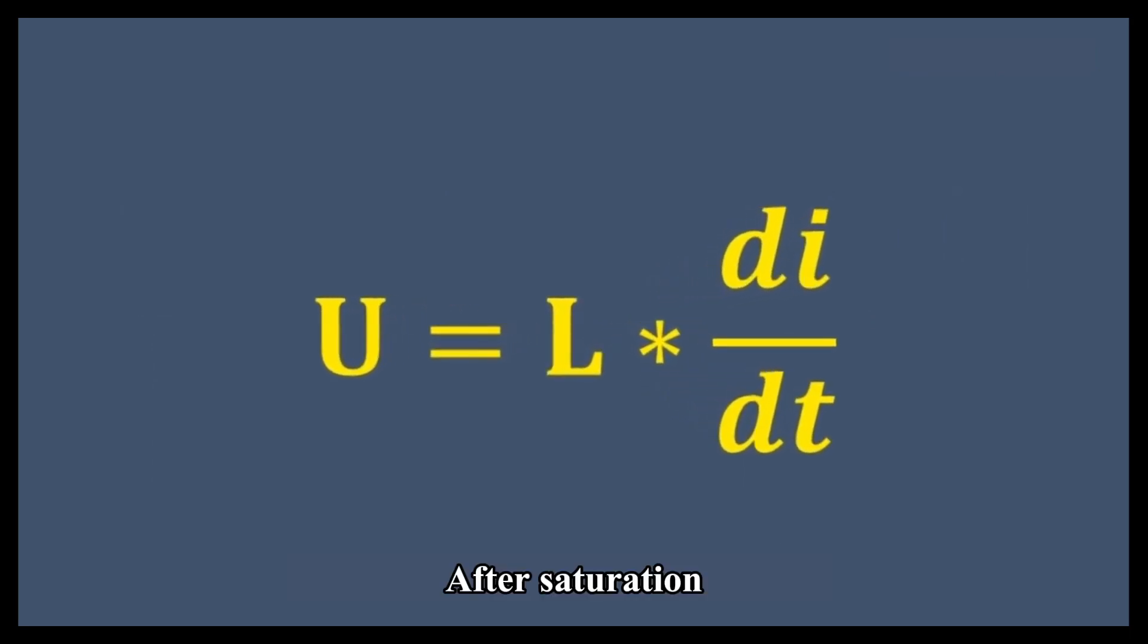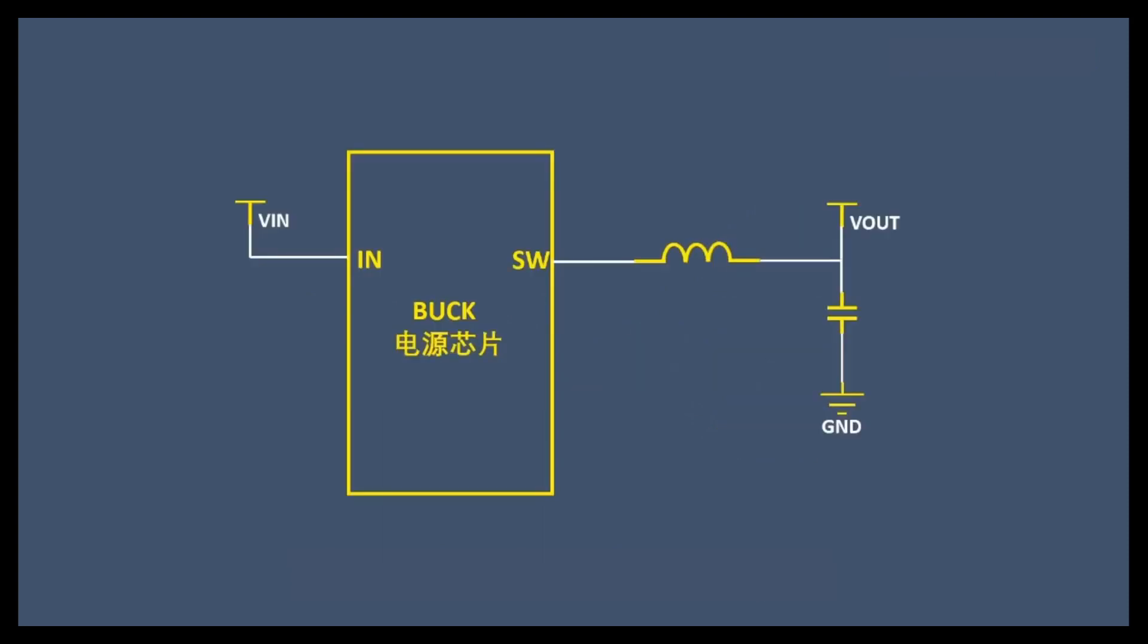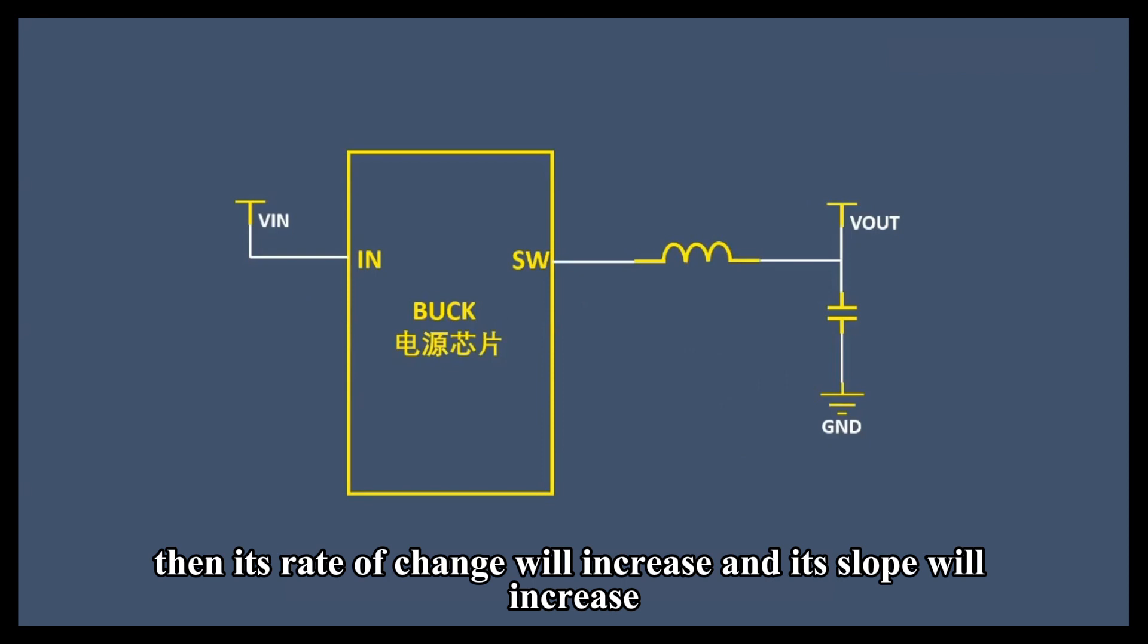After saturation, its resistance to current will weaken. If its voltage difference remains constant, then its rate of change will increase and its slope will increase.